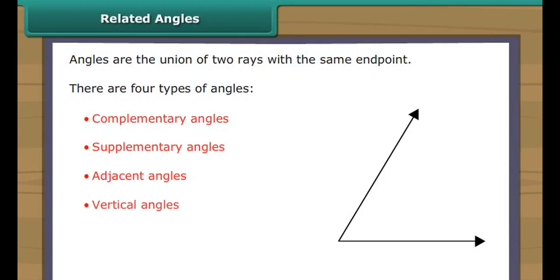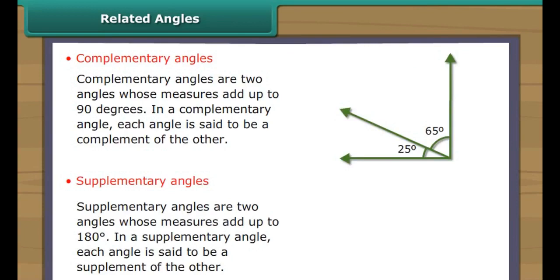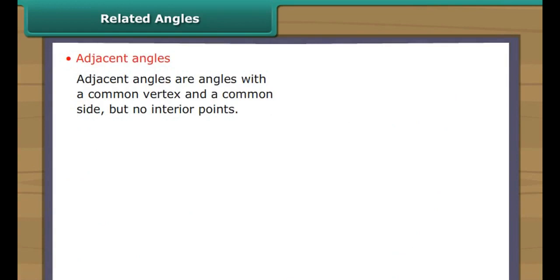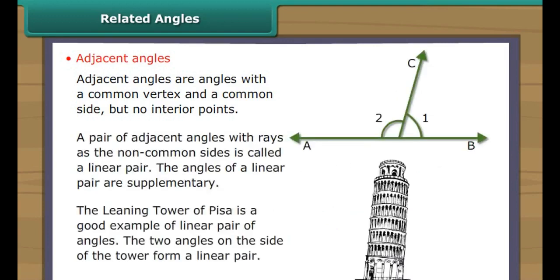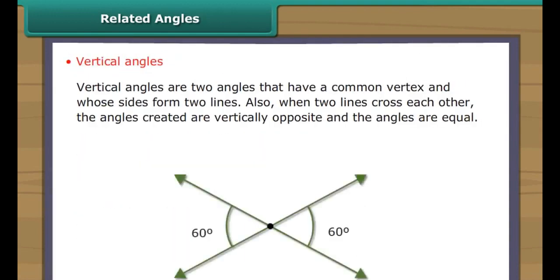Now, take a brief look at all the angles. Complementary angles are two angles whose measures add up to 90 degrees. Supplementary angles are two angles whose measures add up to 180 degrees. Adjacent angles are angles with a common vertex and a common side but no interior points. A pair of adjacent angles with rays as the non-common sides is called a linear pair. Vertical angles are two angles that have a common vertex and whose sides form two lines.